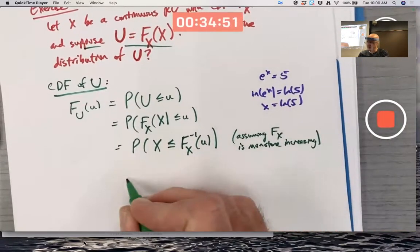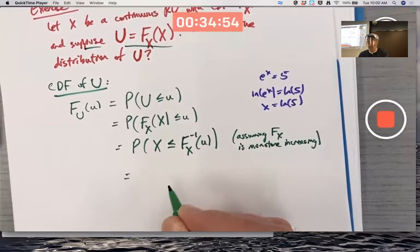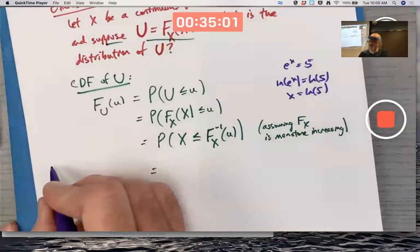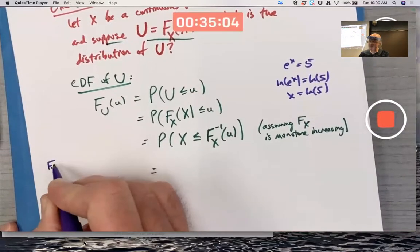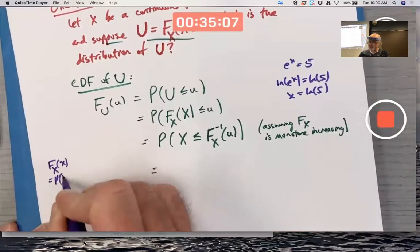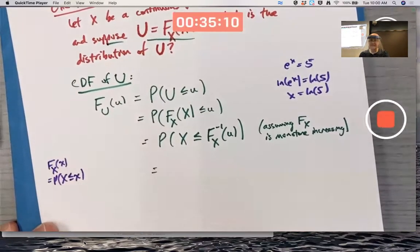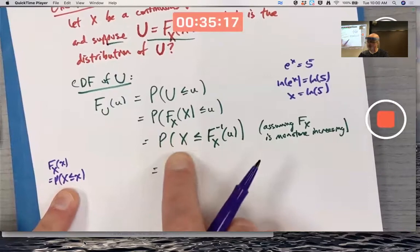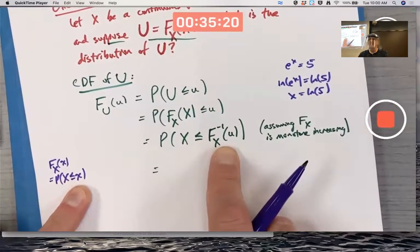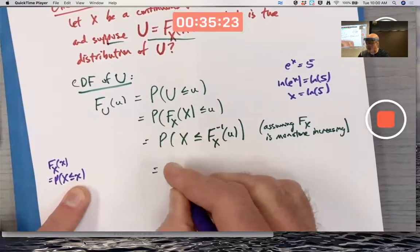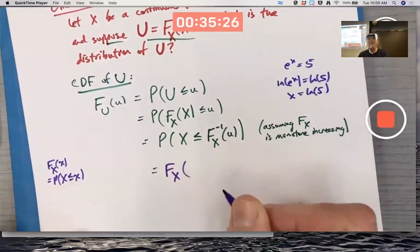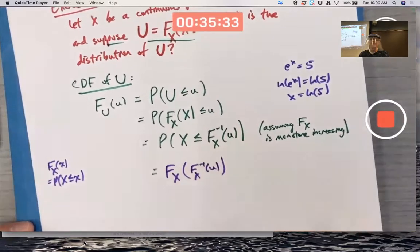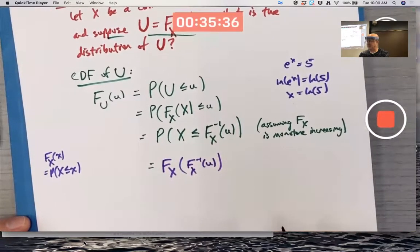What's the CDF of capital X? By definition, capital F sub X of little x is the probability that capital X is less than or equal to little x. This is a value of capital F sub X - specifically, capital F sub X inverse of U. But FX and FX inverse are inverses, so this gives you U.